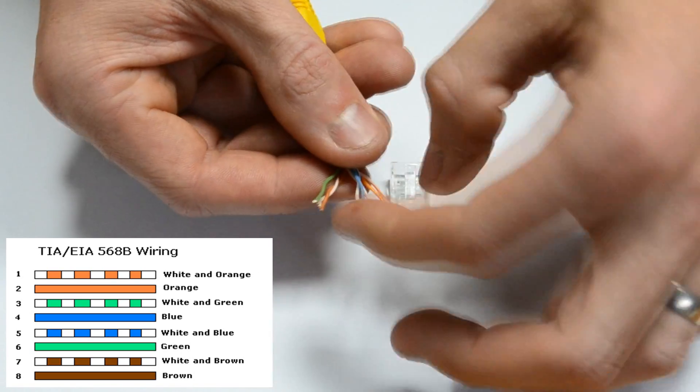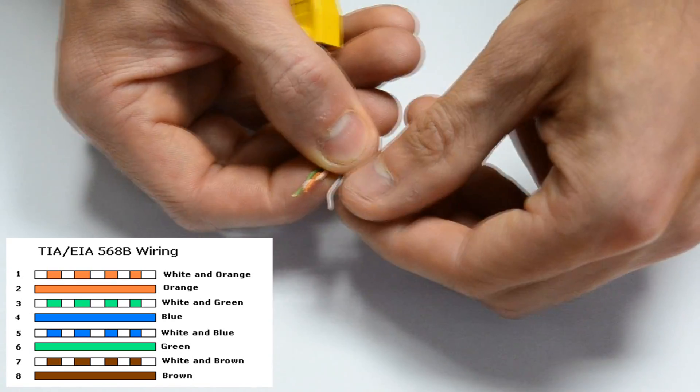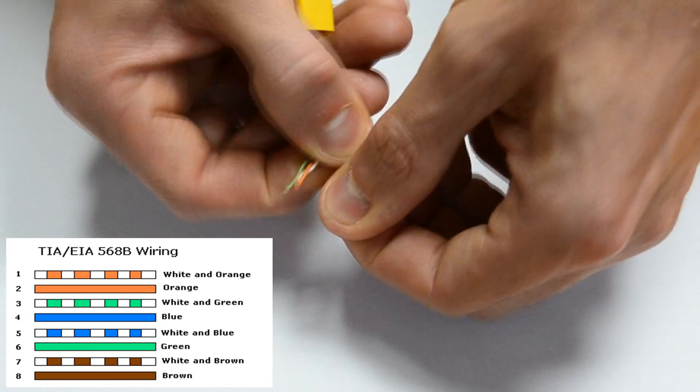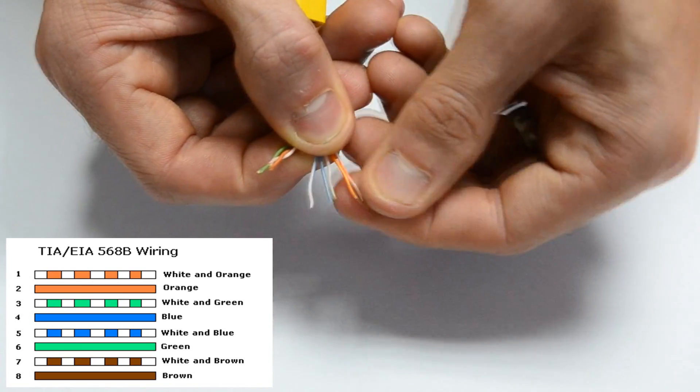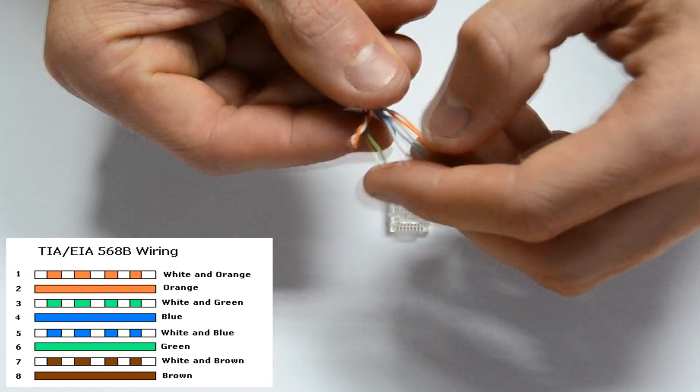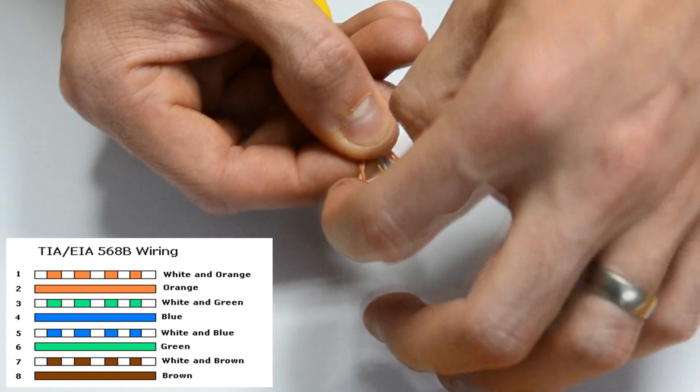And the way I like to remember it is just that way. So you start with the orange then you go into the green on the single cable. Then you have the blue pair in the middle. Then you go into the other green cable and then you've got the brown whites and brown.